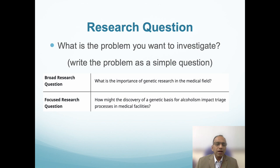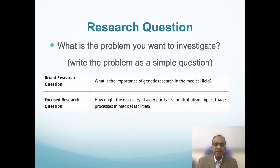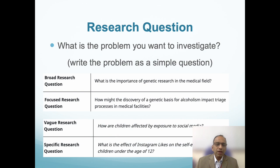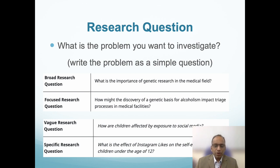Here are a few examples. 'What is the importance of genetic research in the medical field?' — this is too broad a question. A more specific question would be: 'How might the discovery of the genetic basis of alcoholism impact the triage processes in medical facilities?' — much more specific, measurable, and testable. Similarly, 'How are children affected by exposure to social media?' is too big, too broad, and too non-specific. A better version: 'What is the effect of Instagram likes on the self-esteem of children under the age of 12?' The research question must identify your population and guide the methodology of the study.